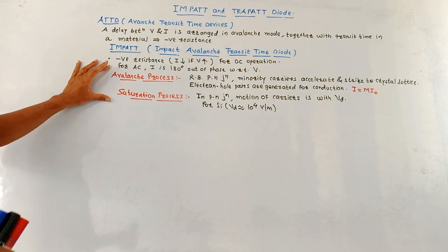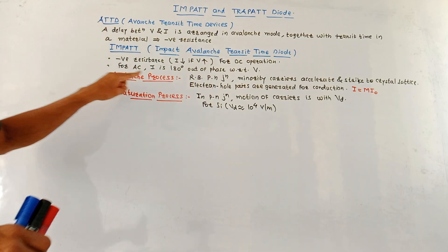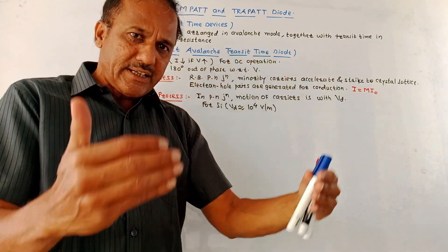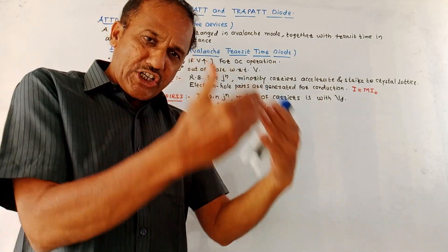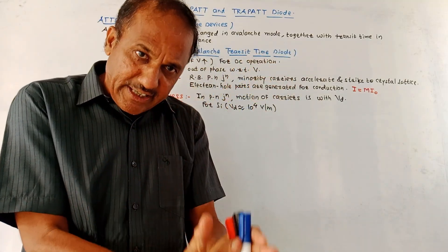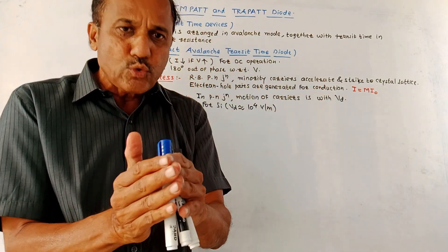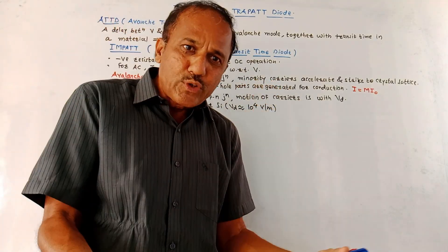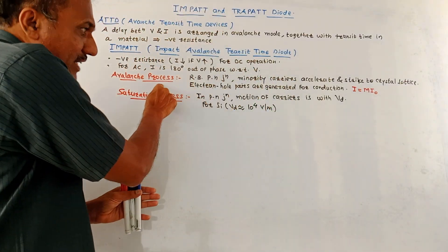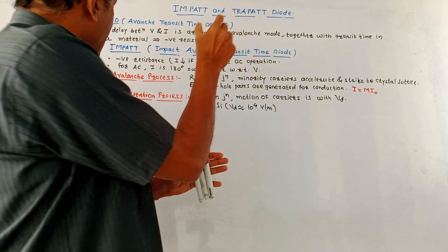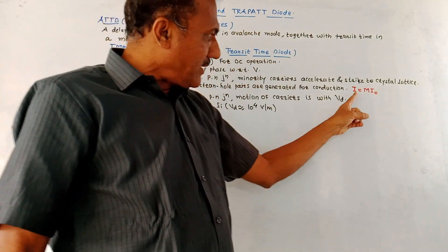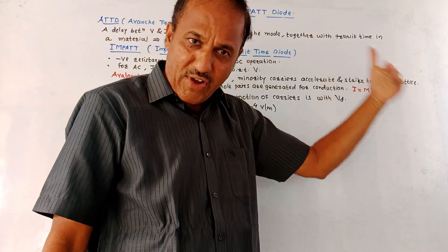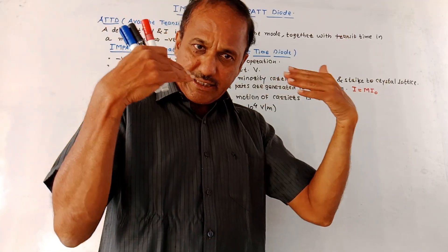Then there are two types of processes in this IMPATT diode. First is avalanche process. If a PN junction is reverse biased and if you go on increasing the reverse bias, then there will be acceleration of the minority carriers. Such accelerated minority carriers will strike to the crystal lattice. It will produce more number of electron and hole pairs and it will help to improve the conductivity. Such process is called avalanche process. In this case the amplified current is given as M into I0. I0 is the leakage current. M is the multiplication factor.